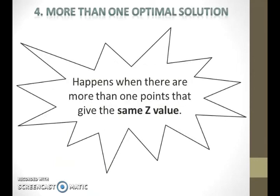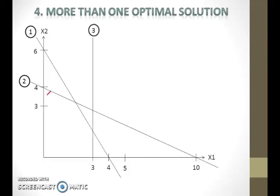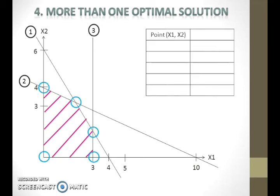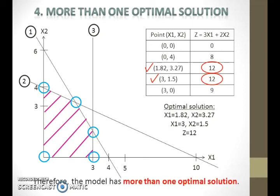More than one optimal solution happens when there are more than one points that give the same z value. Suppose we want to solve this linear programming model using the graphical method. We draw the graph, identify the feasible region, and find the optimal solution. Note that there are two points that give the same highest z value. Therefore, the model has more than one optimal solution.